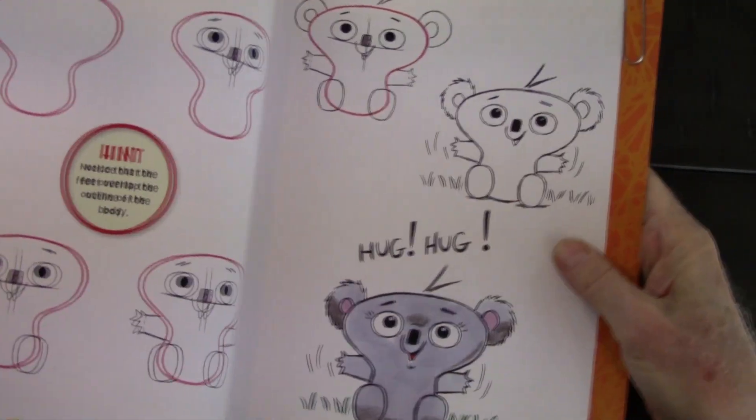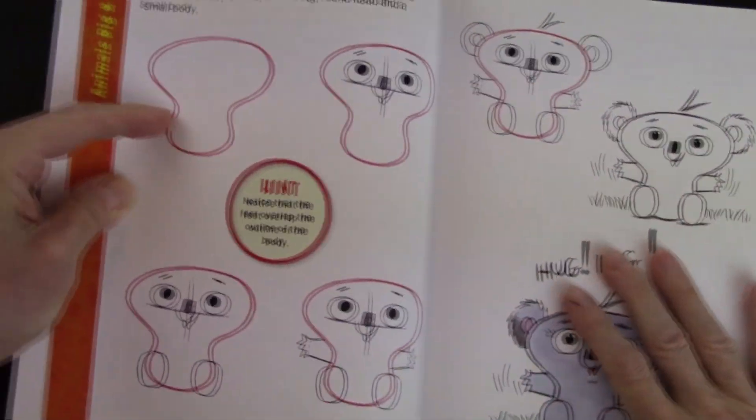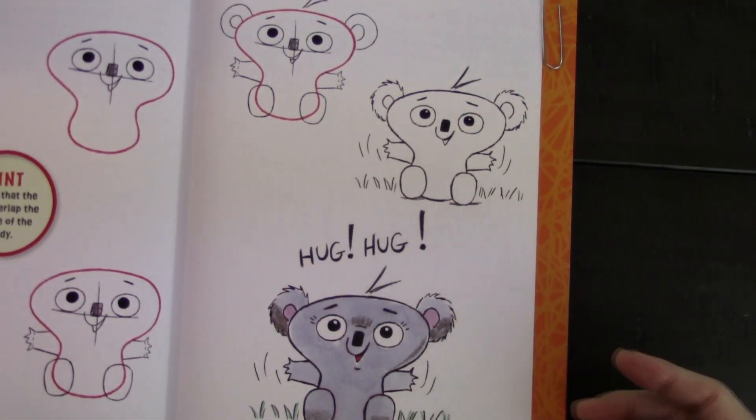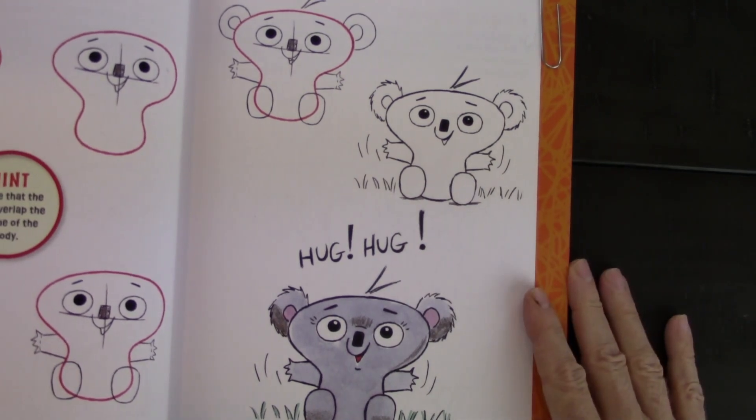We'll start with some simple shapes. One, two, three, four, five, six, and seven. A baby koala who just wants a hug.